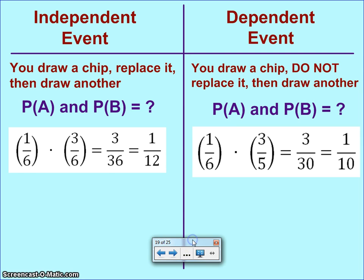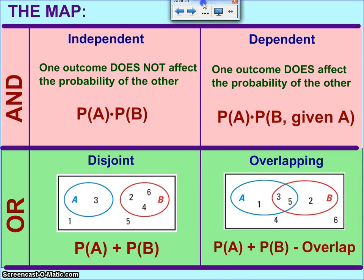You also notice that, again, the headings changed. And these are two more vocabulary words, independent events versus dependent events. And the definitions of those are: an independent event does not, one event does not have an effect on the probability of the other. A dependent event means that you do have an effect on the other.